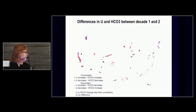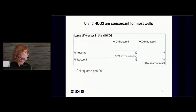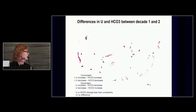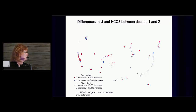On the decadal change map, the solid red dots are concordant changes with both uranium and bicarbonate increasing — they occur mainly in the west, although there are a few wells scattered in the east. The solid blue dots are concordant decreases in both uranium and bicarbonate, occurring generally in the same places as the increases. The discordant samples, where uranium and bicarbonate go in opposite directions, are marked with X signs, and there are not very many of those.